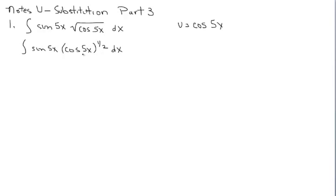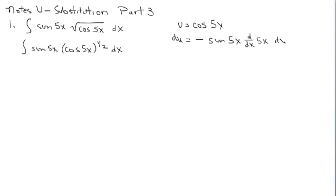I think we've chosen the right path. If I see this power function with the trig function, I'm thinking the inside function is the trig function, not the outside function. It appears I'm going to be doing a reverse power rule. If u is cosine(5x), let's find du. Using the chain rule, the outside function is cosine, that derivative is negative sine with 5x left alone, times the derivative of 5x. So du equals negative 5 sine(5x) dx.